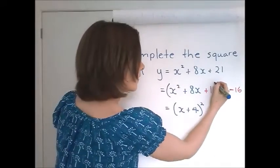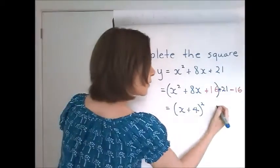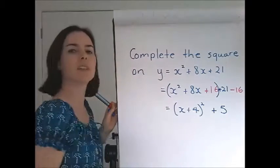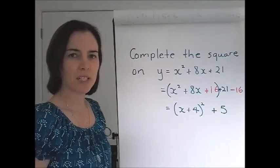This much, up to the 16 there, is in this bracket. Plus 21 minus 16 is plus 5. We were asked to complete the square, so that is as far as we need to go.